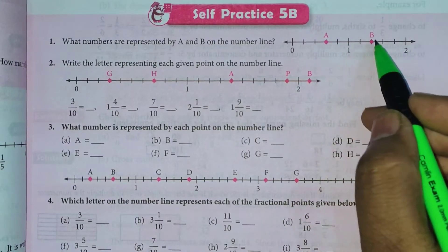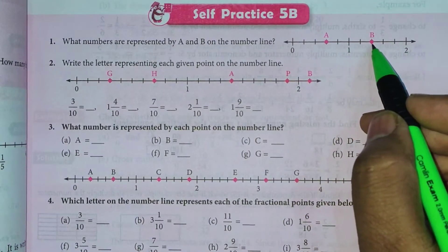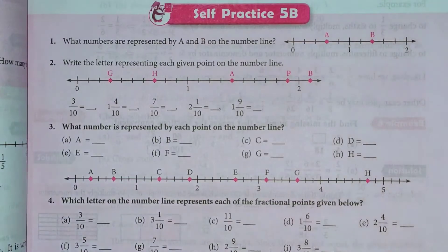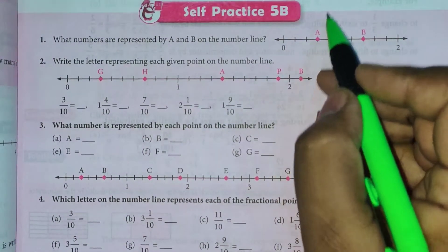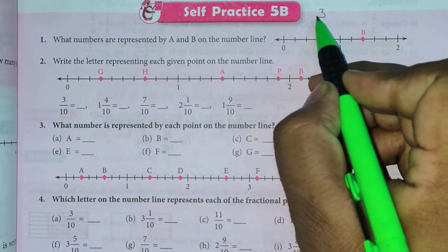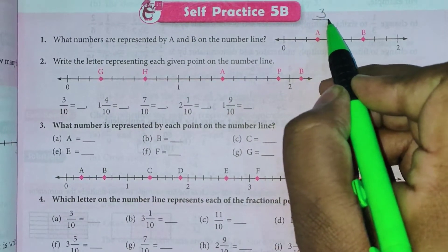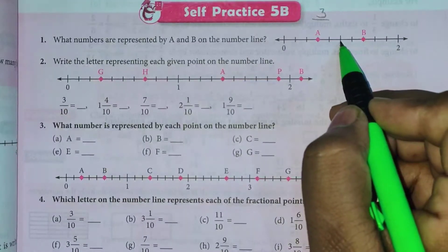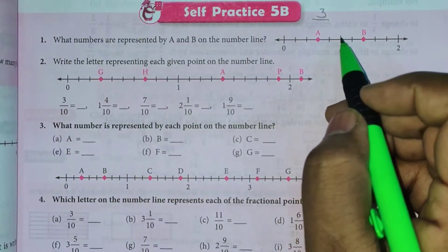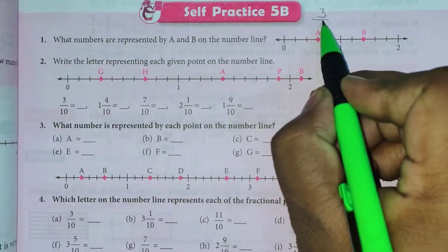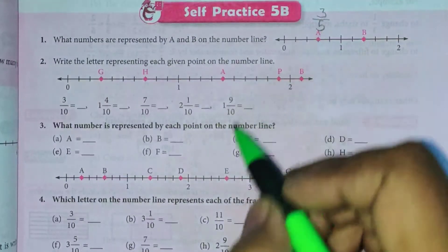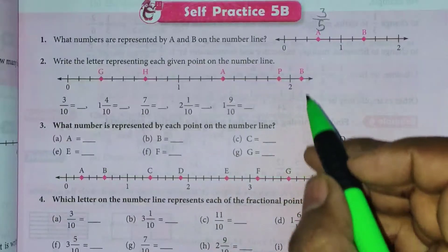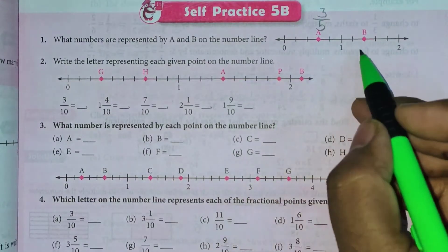Aisai hi aap dekhenge. One ke baad second place par B hai. Toh yeh kaun se place par hai? Third place par hai. It means three upon — aap dekhenge zero se one tak yhaan tak hamaare paas total five lines hain. Toh three upon five. A ki value kitni ho jayegi? Three upon five. Vaisa hi B ki value hume dekhna hai.